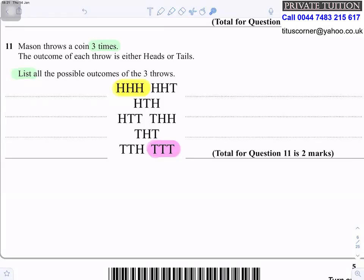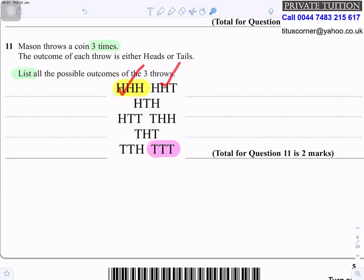Question 11: Mason throws a coin three times. List all possible outcomes. You can get: HHH, HHT, HTH, HTT, THH, THT, TTH, or TTT. There are 8 possible outcomes in total.